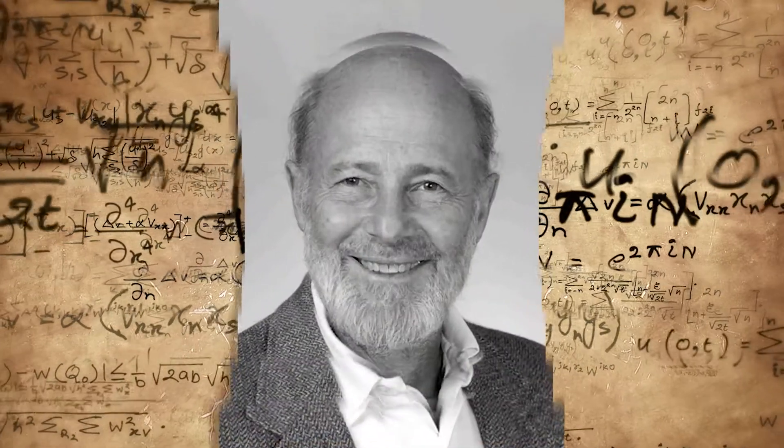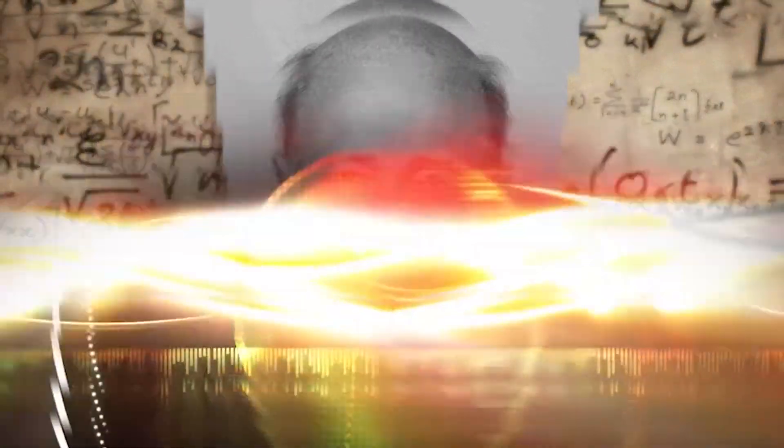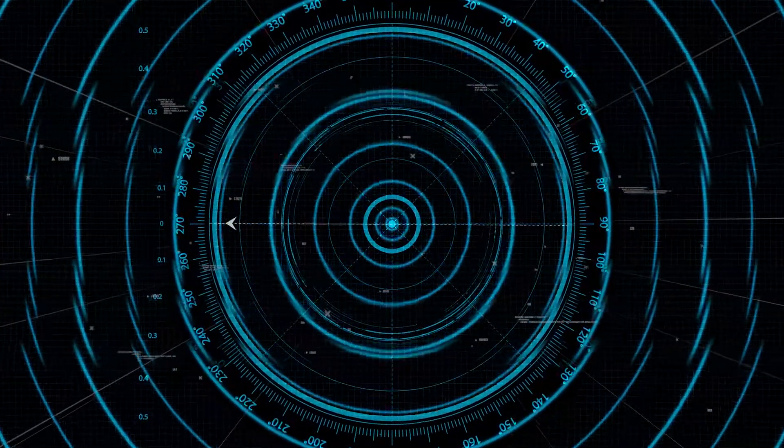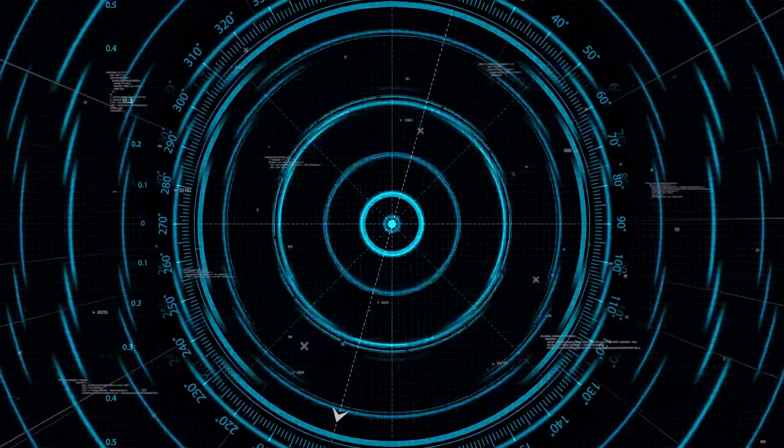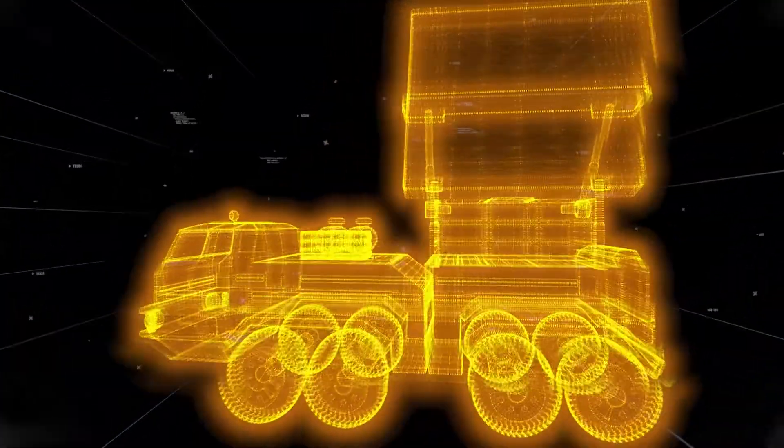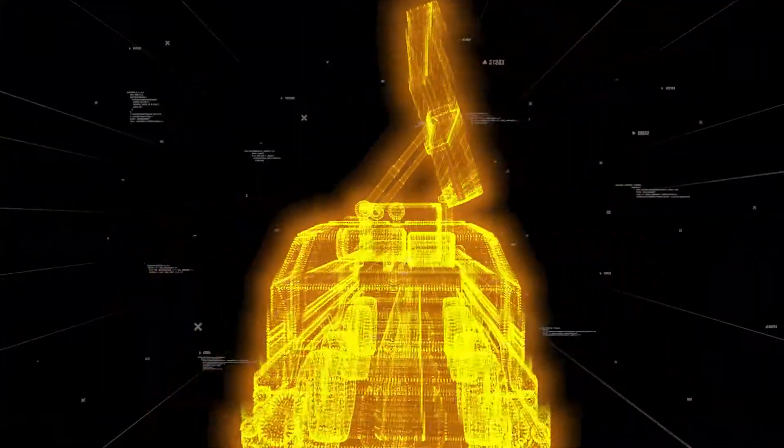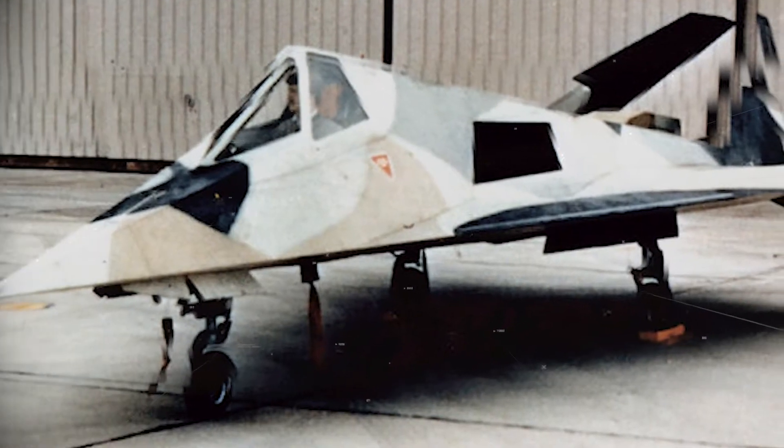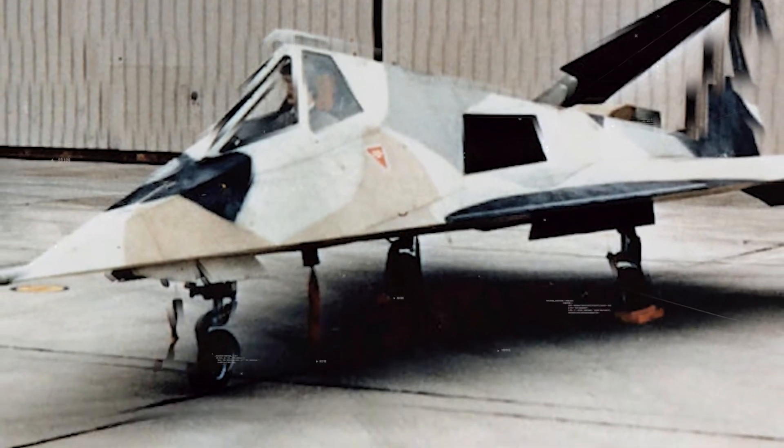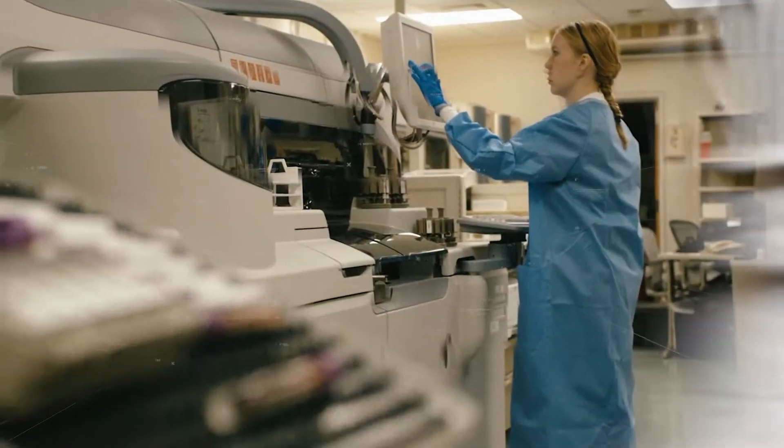His name was Joseph Keller, and at his desk he was solving certain equations, equations about how light and radar are reflected by objects. At first, he wasn't sure where his curiosity would lead him. He thought perhaps he'd find the key to a better radar system, but instead he developed the equations that led to stealth.